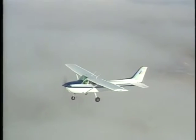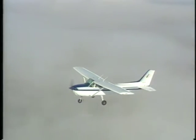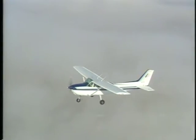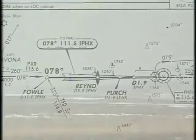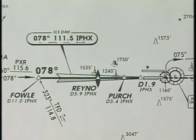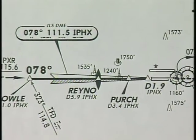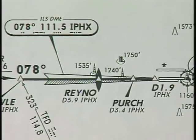Now let's take a look at some of the common procedures used to fly an approach. One of these is the use of radar vectors to align your aircraft with the final approach course.